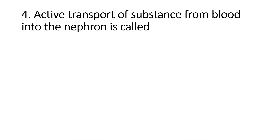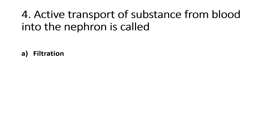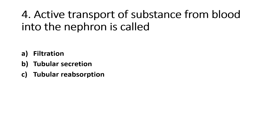Active transport of substance from blood into the nephron is called: Option A - Filtration, Option B - Tubular Secretion, Option C - Tubular Reabsorption, Option D - Osmosis. The right answer is Option B, Tubular Secretion.